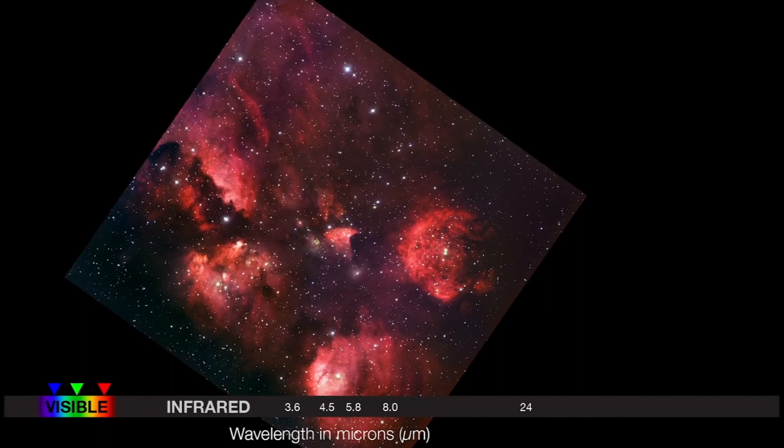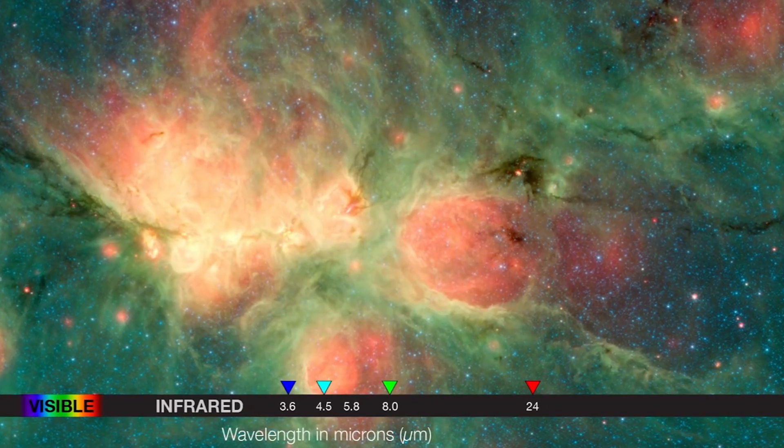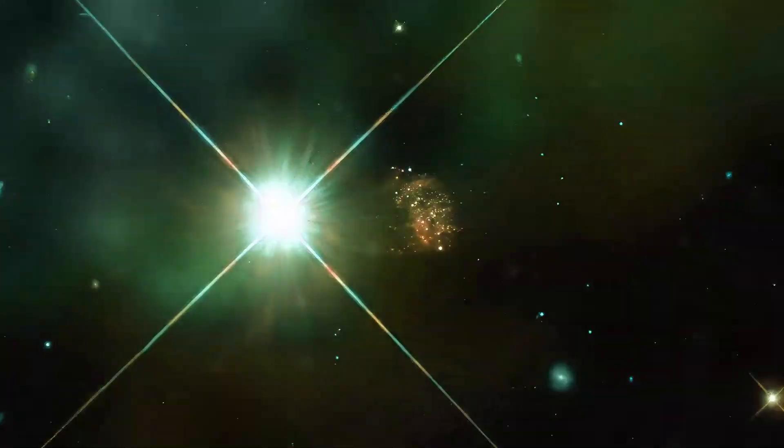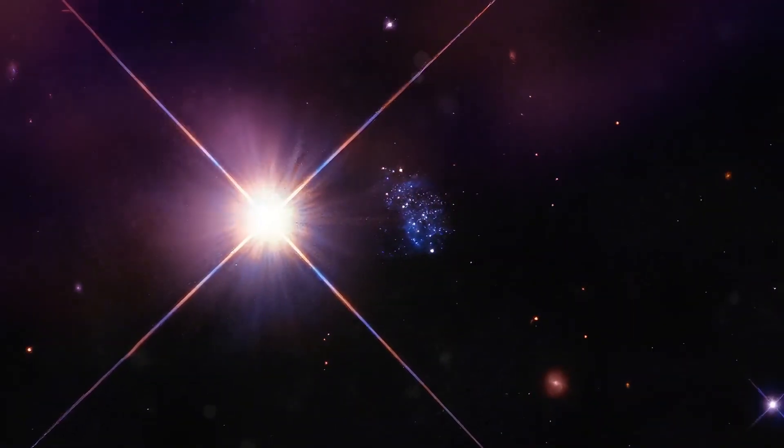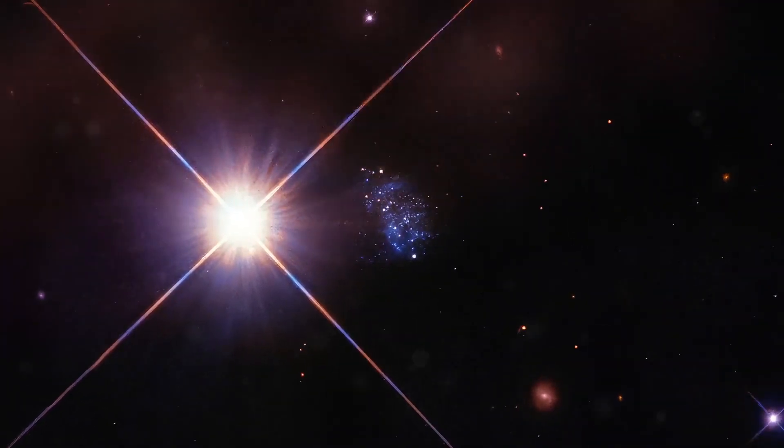Infrared light has a longer wavelength than visible light, allowing it to penetrate dust and gas that can obscure visible light. This reveals crucial information about the temperature, age, and chemical composition of stars and galaxies.